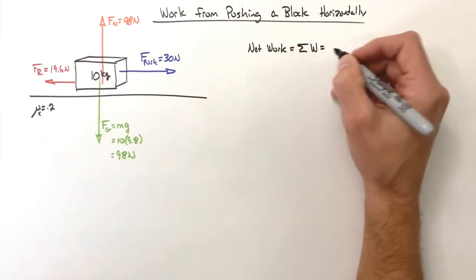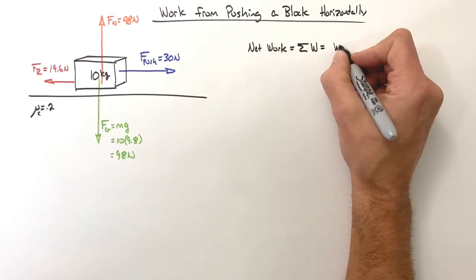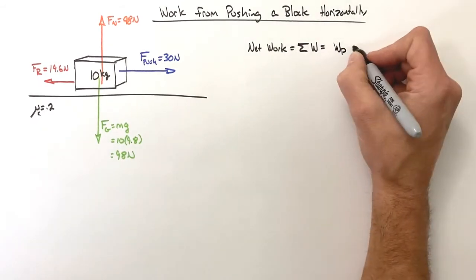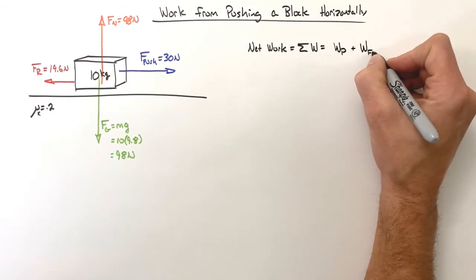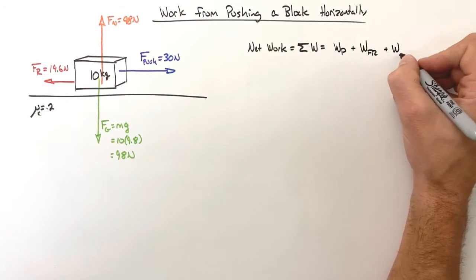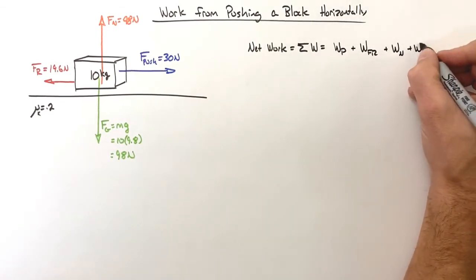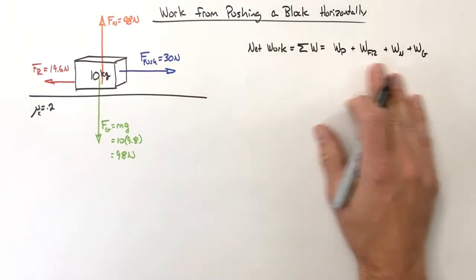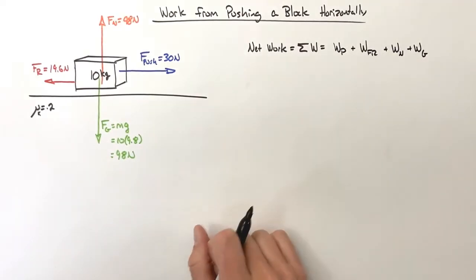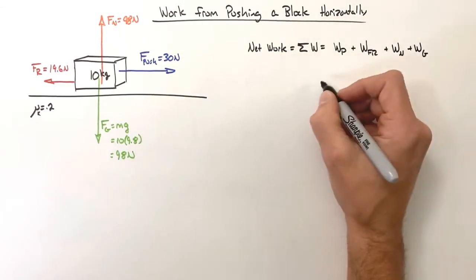So in finding our net work, we're actually going to be looking at the work by each individual force. So that means we're going to have the work by the push force plus the work by friction plus the work by the normal force plus the work by gravity. The sum of these four works is going to be the total work done on the block. So let's start with the push force.